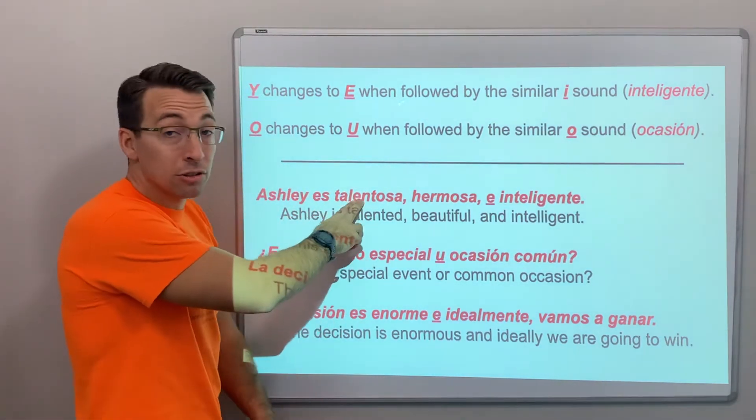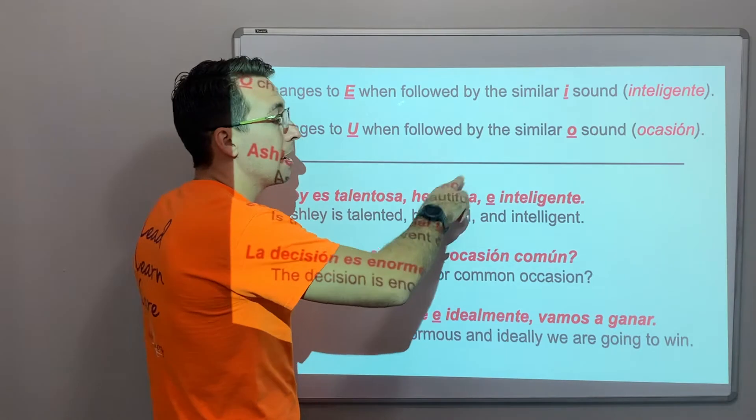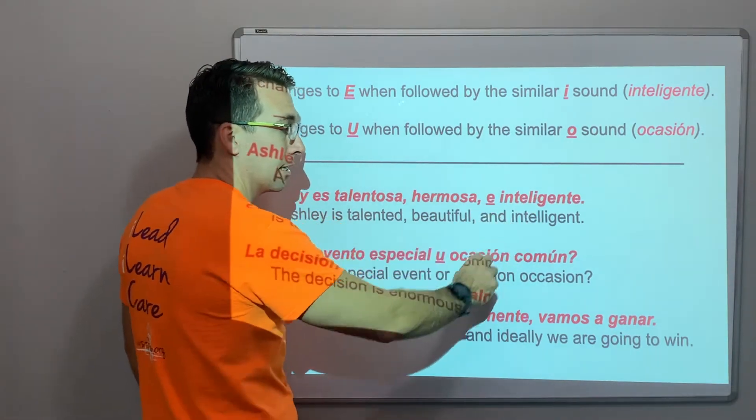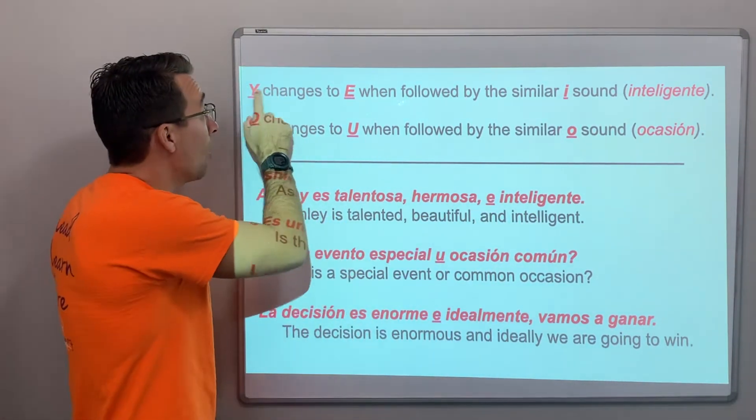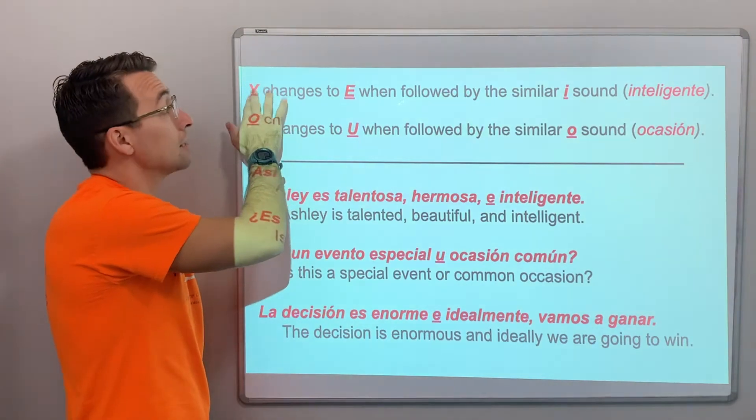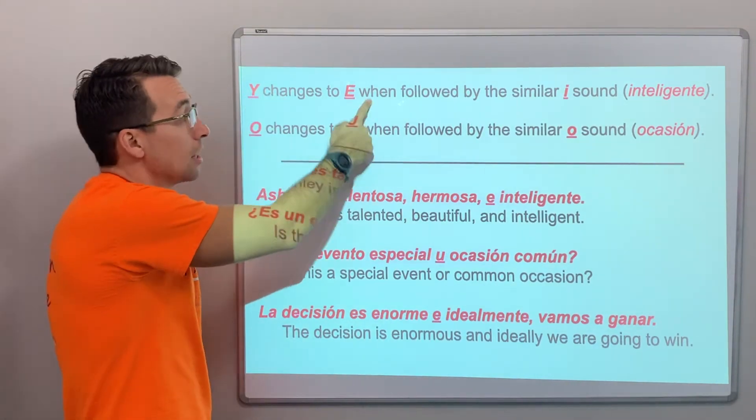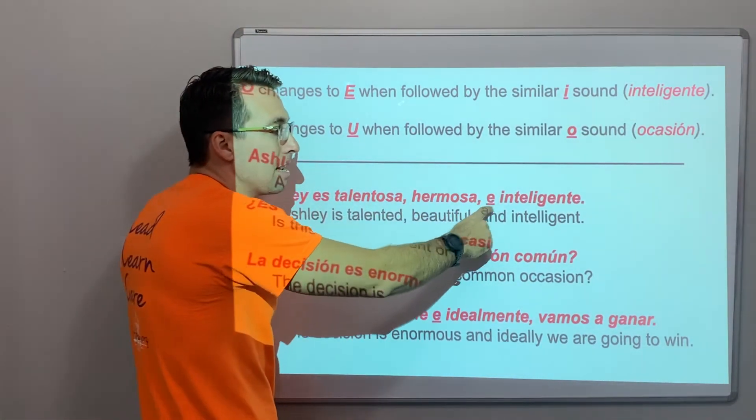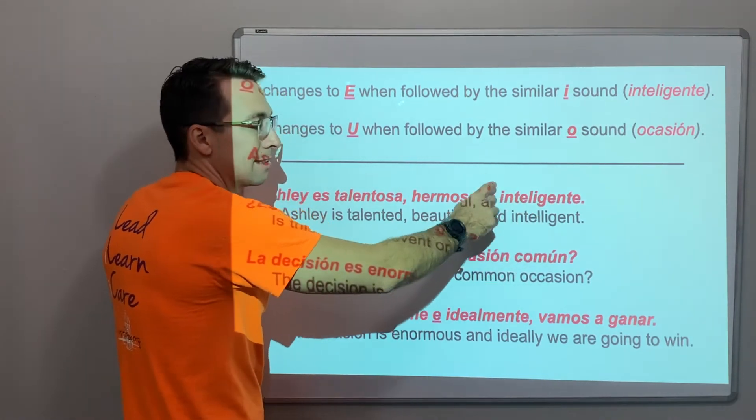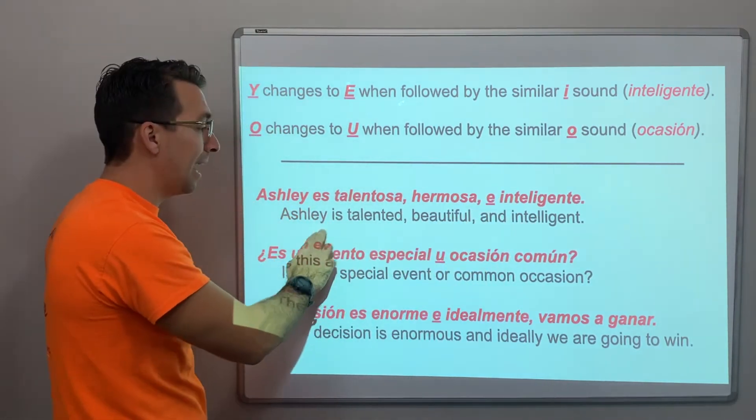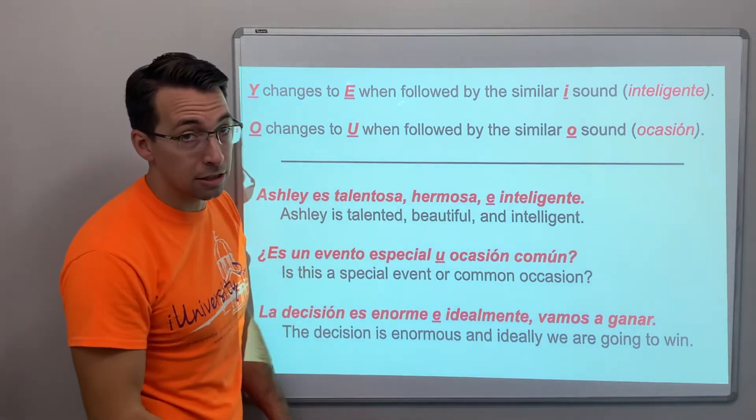So, Ashley es talentosa, hermosa, e inteligente. This y is a y. E changes to e because you don't want to say y inteligente. Y inteligente. It's e inteligente. Ashley is talented, beautiful, and intelligent.